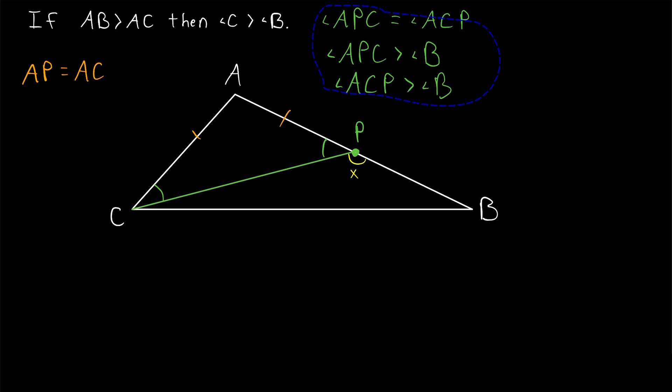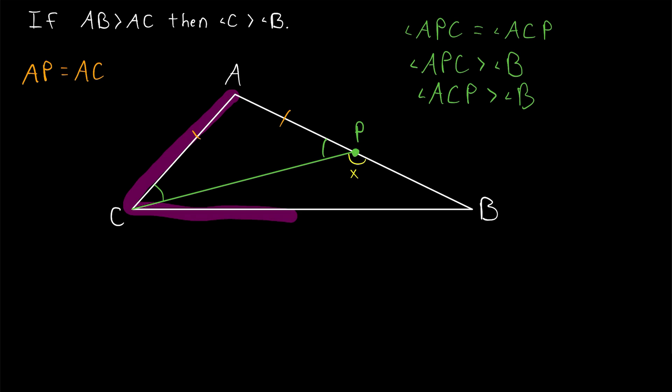But then of course, as we stated earlier, since angle C consists of angle ACP plus a little bit more, we know that angle C is greater than angle ACP. And so we can put that on the front of this inequality. Angle C is greater than angle ACP, which is greater than angle B. Thus, as desired, angle C is greater than angle B.